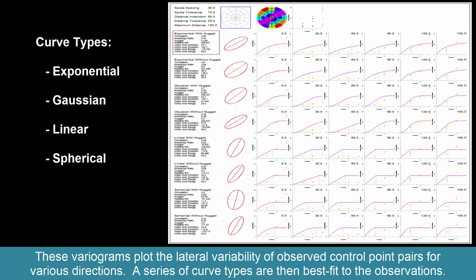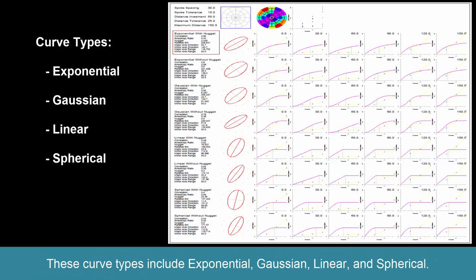A series of curve types are then best fit to the observations. These curve types include exponential, Gaussian, linear, and spherical.